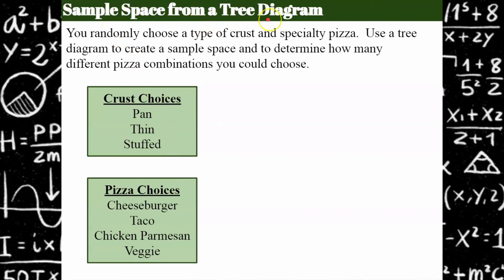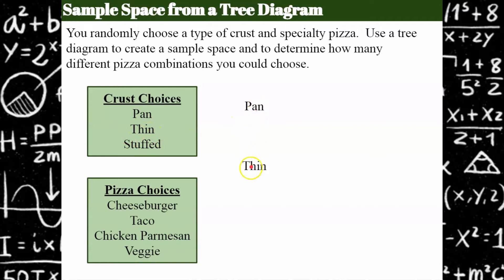First, let's talk about creating a sample space from a tree diagram. We're going out for pizza and we're going to randomly choose a type of crust and a specialty pizza. I want to create a tree diagram to represent the sample space — all the combinations showing how many different pizzas I can make. We have three different crust choices: pan, thin, or stuffed crust. Those are going to be our branches — our first choice — think of it as a vertical list. I've just brought my choices over to the right, and now I go to my pizza.